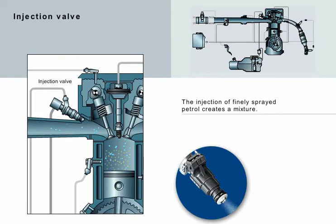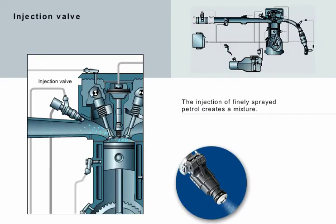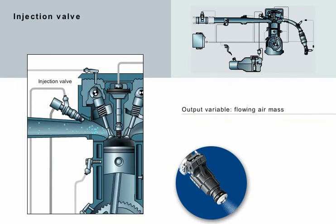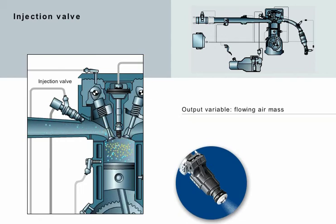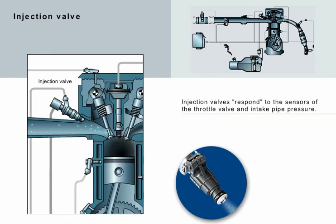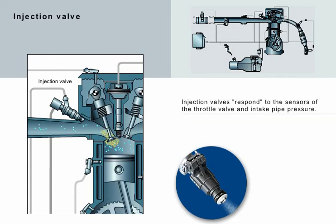The injection valves are the main engine control actuators along with the ignition coils and spark plugs. The mixture is produced by injecting finely sprayed petrol. The output variable in this case is the quantity of air supplied to the engine. As the amount of air flowing in increases, more petrol has to be injected to create the optimum mixture for the individual operating conditions. The injection valves therefore respond to the air mass values recorded by the engine control unit, which is why they are connected to the sensors of the throttle valve and intake pipe.